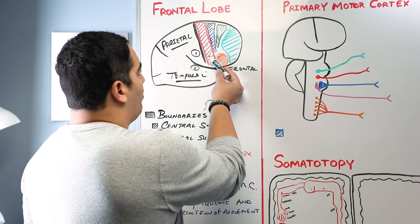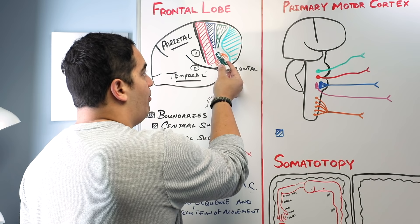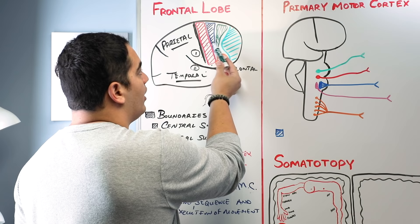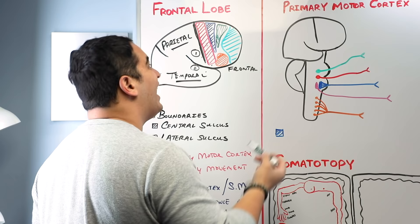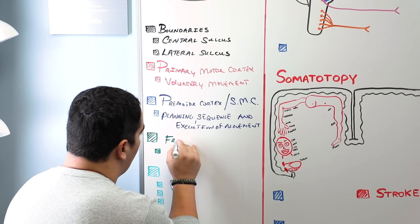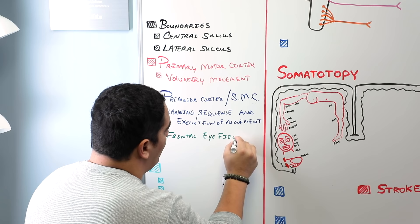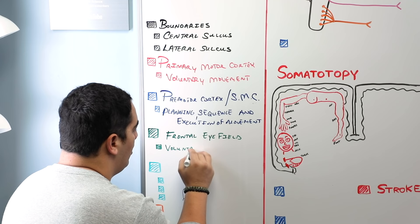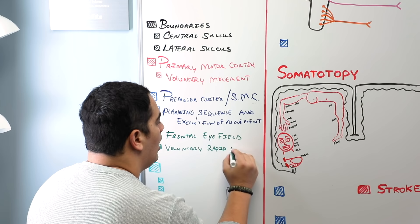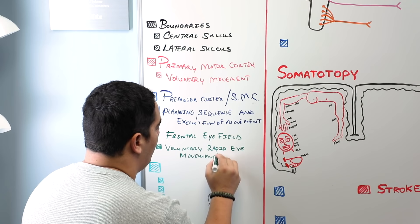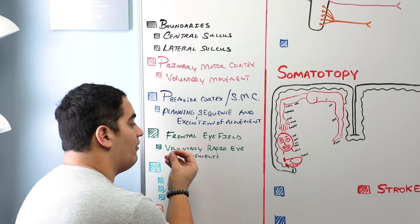Moving a little bit more anterior, there's another special structure called the frontal eye fields. These are involved with particularly voluntary, rapid — sometimes referred to as saccadic — eye movements. If you just had to give a simple explanation, the frontal eye fields are involved in voluntary rapid eye movements.